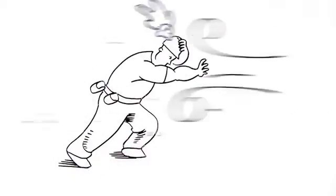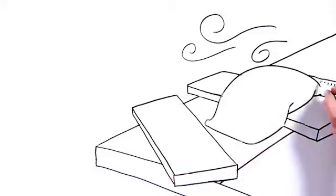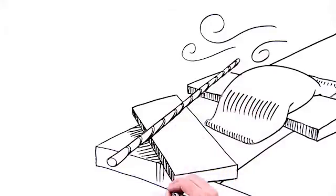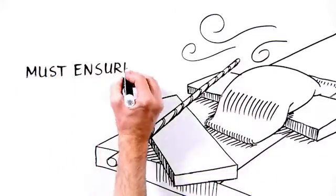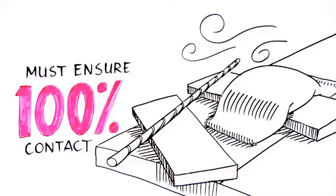Depending on the wind conditions on your job site, it might be necessary to weight down the overlap of the blankets with dimensional lumber, rebar, or sandbags to ensure 100% contact between the blanket and the slab. It's as easy as that.